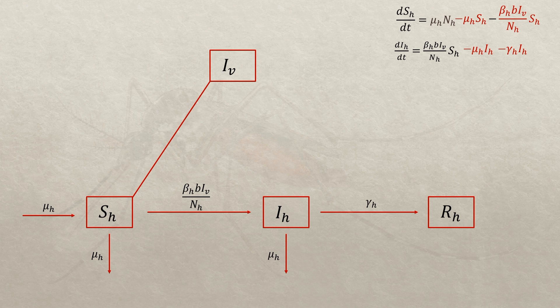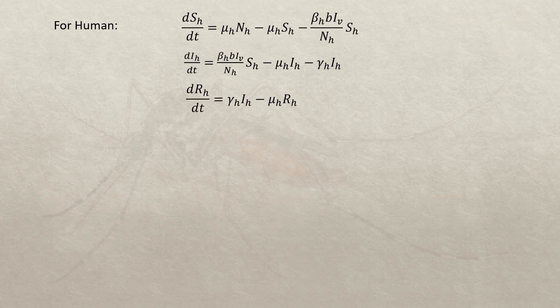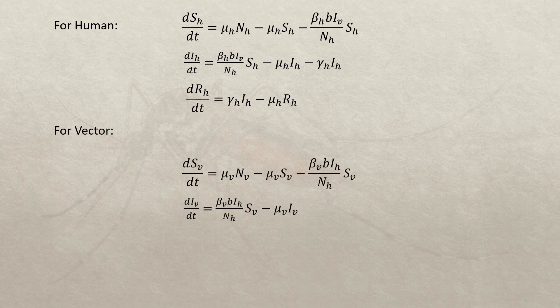In this same pattern, we obtain the full system of differential equations. For humans, we get three differential equations, and for the vector population, we get two equations, because there are two compartments in the mosquito population. The condition is S sub h plus I sub h plus R sub h equals the total human population N sub h.